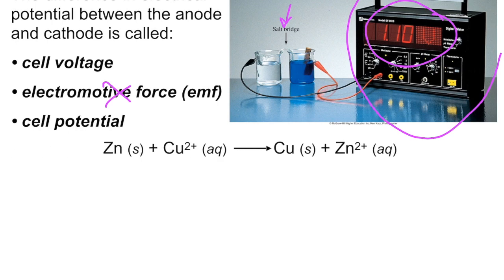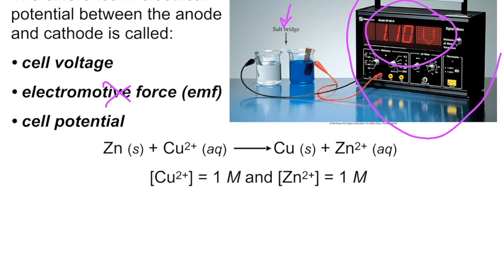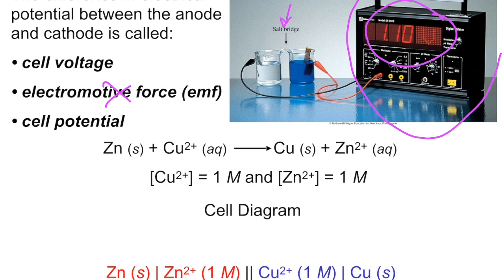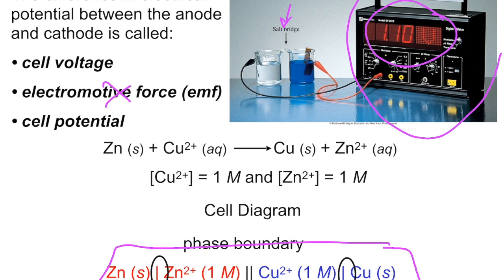Here's the example between copper and zinc. If we make those solutions one molar, we can do what's called a cell diagram. These are important — you're going to be asked to use these more than once. Your cell diagram has the anode always on the left and cathode on the right — alphabetical order.